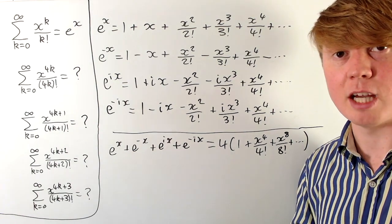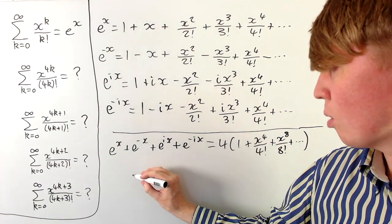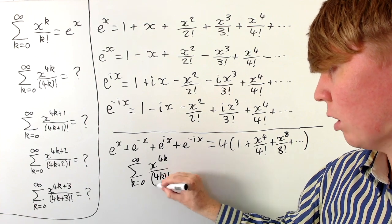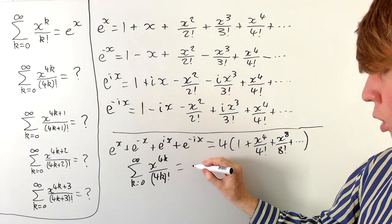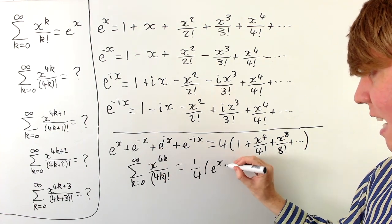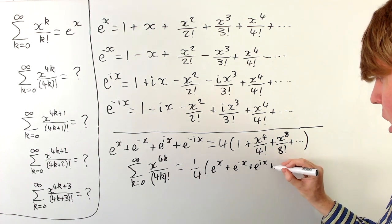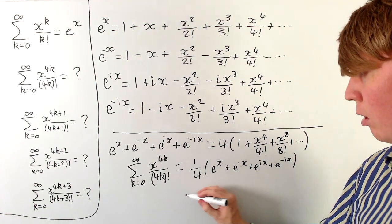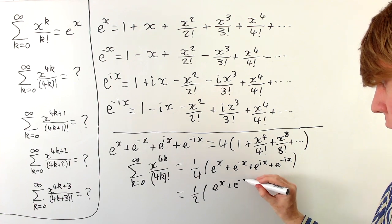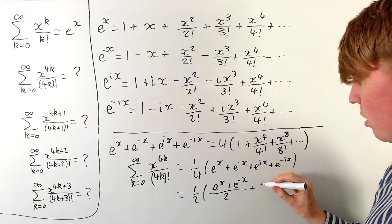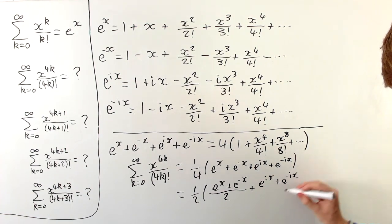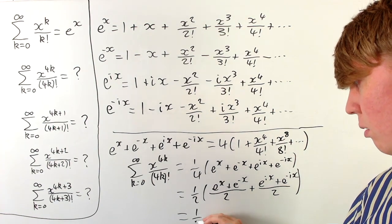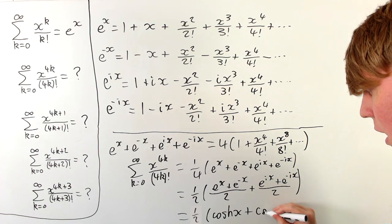So the sum from k equals 0 to infinity of x to the 4k over (4k) factorial equals one quarter times (e to the x plus e to the negative x plus e to the ix plus e to the negative ix). We recognize e to the x plus e to the negative x over 2 as hyperbolic cosine, and e to the ix plus e to the negative ix over 2 as cosine of x. So this is all equal to one half times (hyperbolic cosine of x plus regular cosine of x).